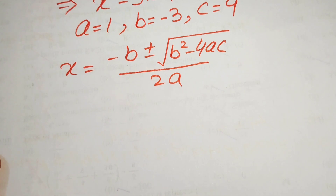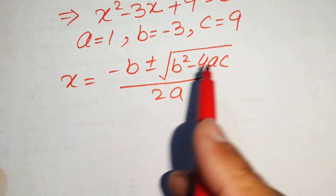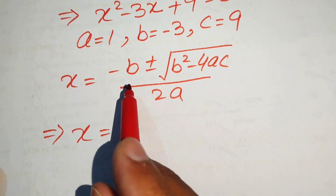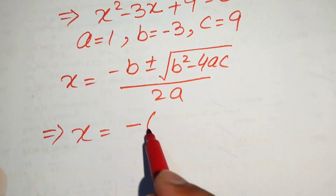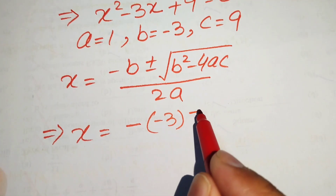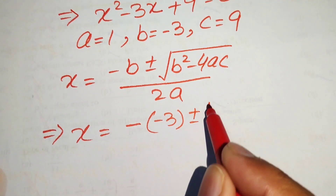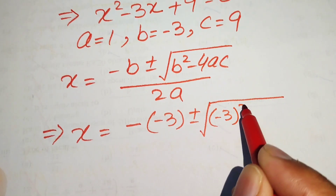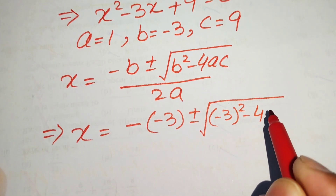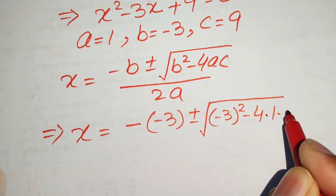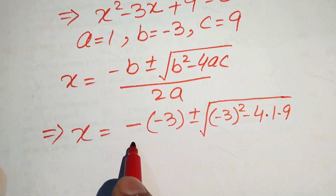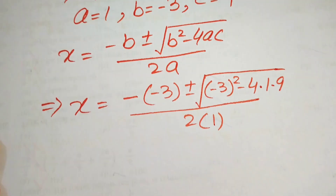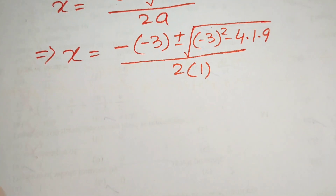Substituting the values: x equals minus (minus 3) plus or minus the square root of (minus 3) squared minus 4 times 1 times 9, all divided by 2 times 1.